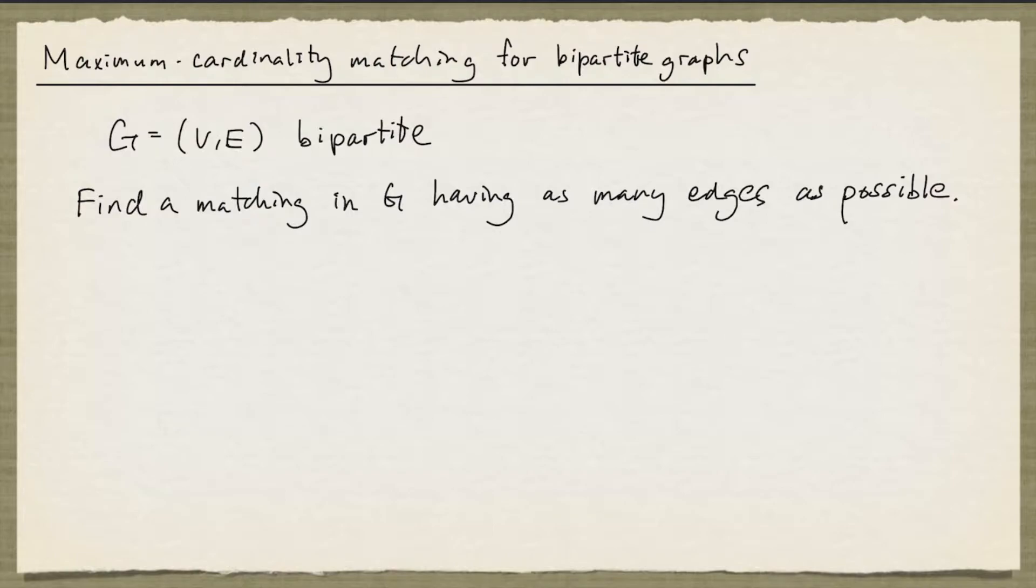This problem is more general than the perfect matching problem because if G has a perfect matching, then a maximum cardinality matching is precisely a perfect matching. A difficult aspect of this problem is to determine if we have indeed found a matching having as many edges as possible.